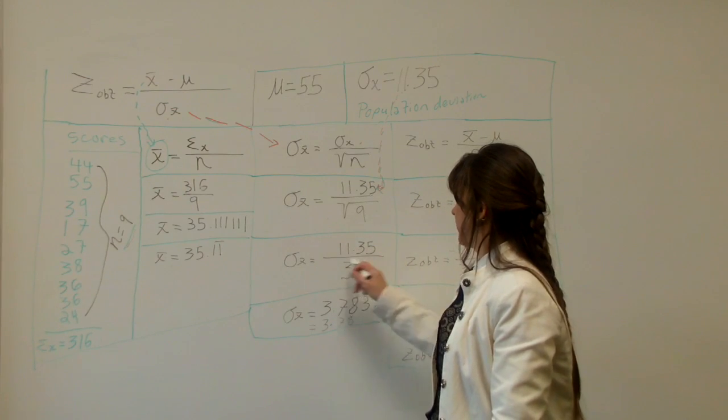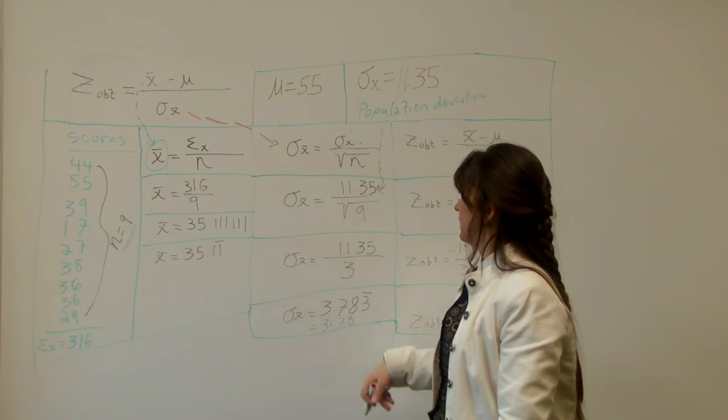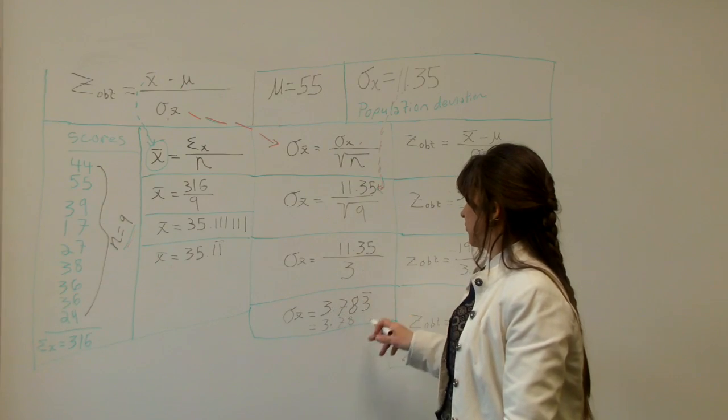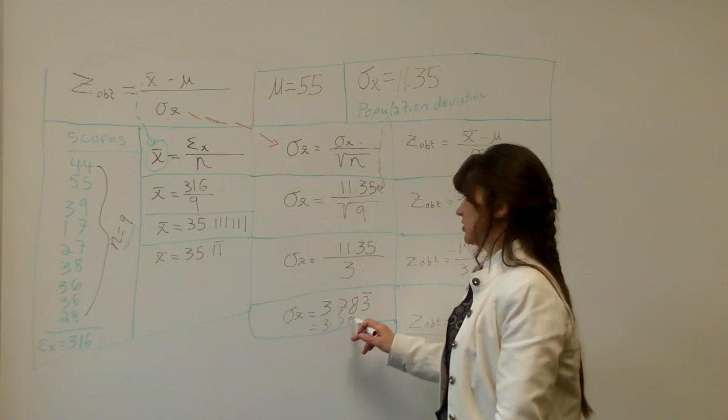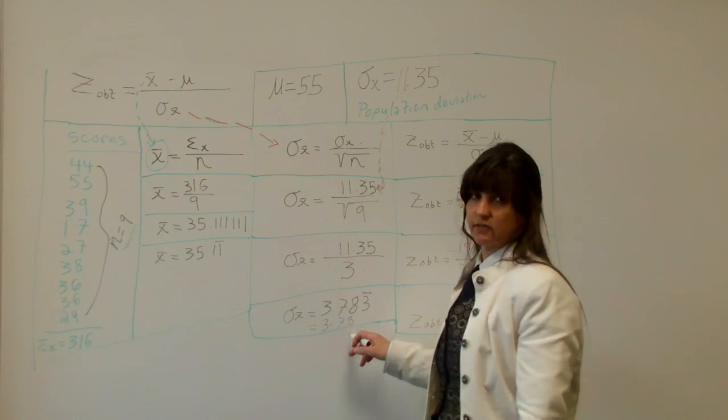And it's 11.35 divided by 3 equals 3.783. Round that to the second decimal place, which is the hundreds place, tens hundreds. That becomes 3.78.